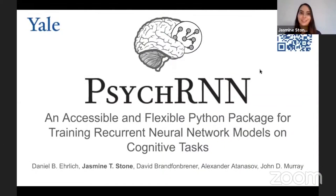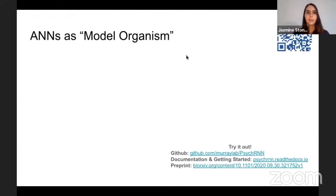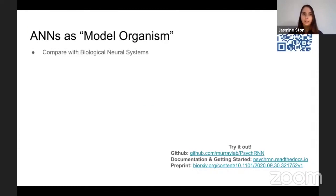Thank you for the introduction. So the package is called PsycRNN. As Ishan and Nutita have discussed, there's been a lot of interest in artificial neural networks recently as model organisms that can be compared with biological neurosystems. For example, in vision, Dan Yamins trained artificial neural networks to do visual tasks and found that the resulting architecture was similar to the representations we see in biological visual systems.